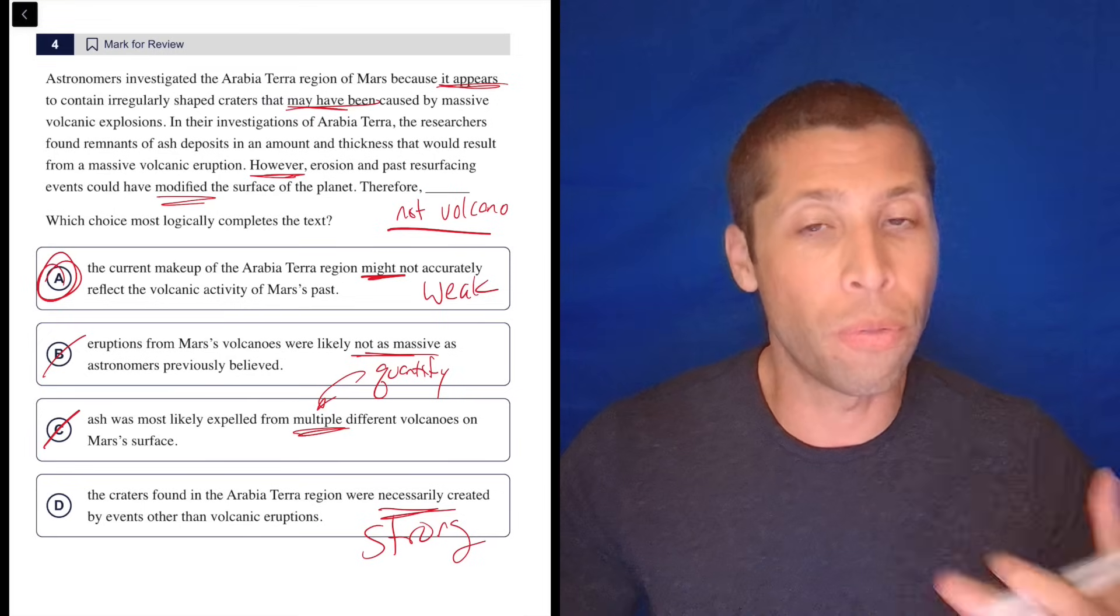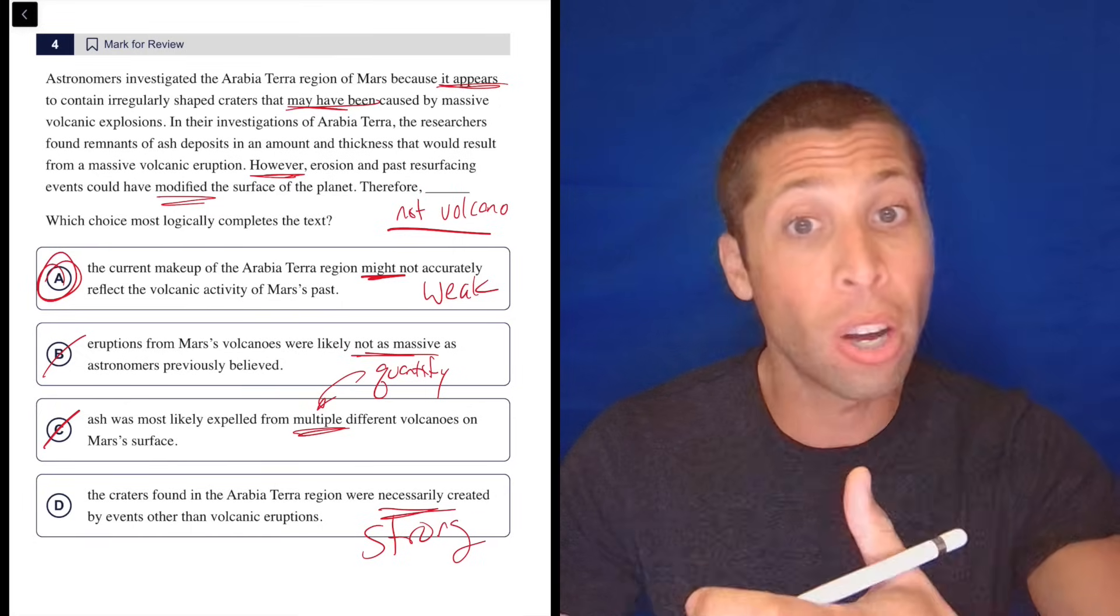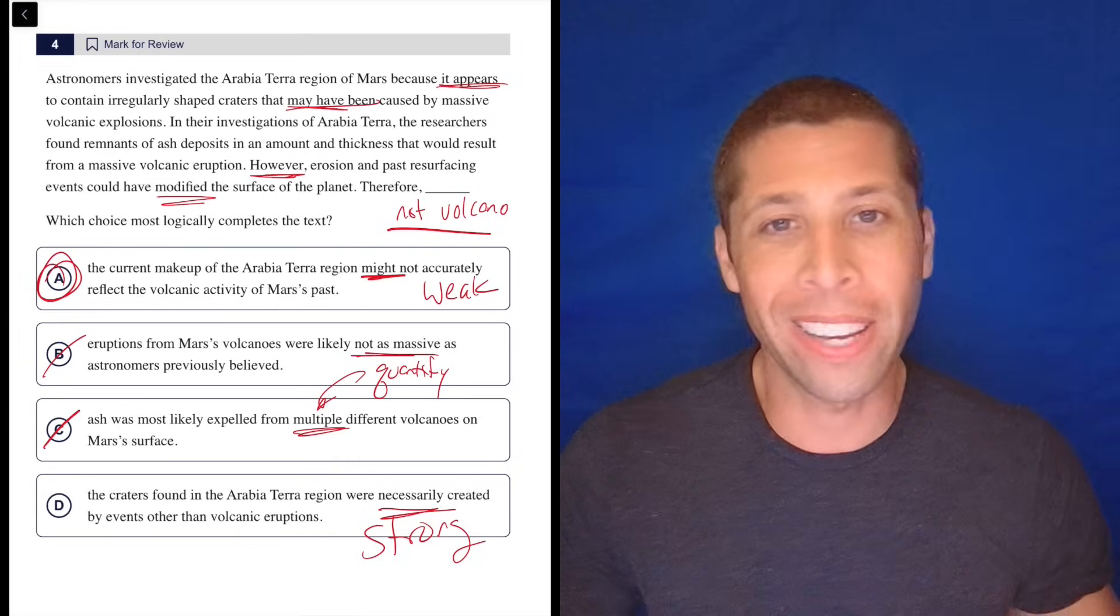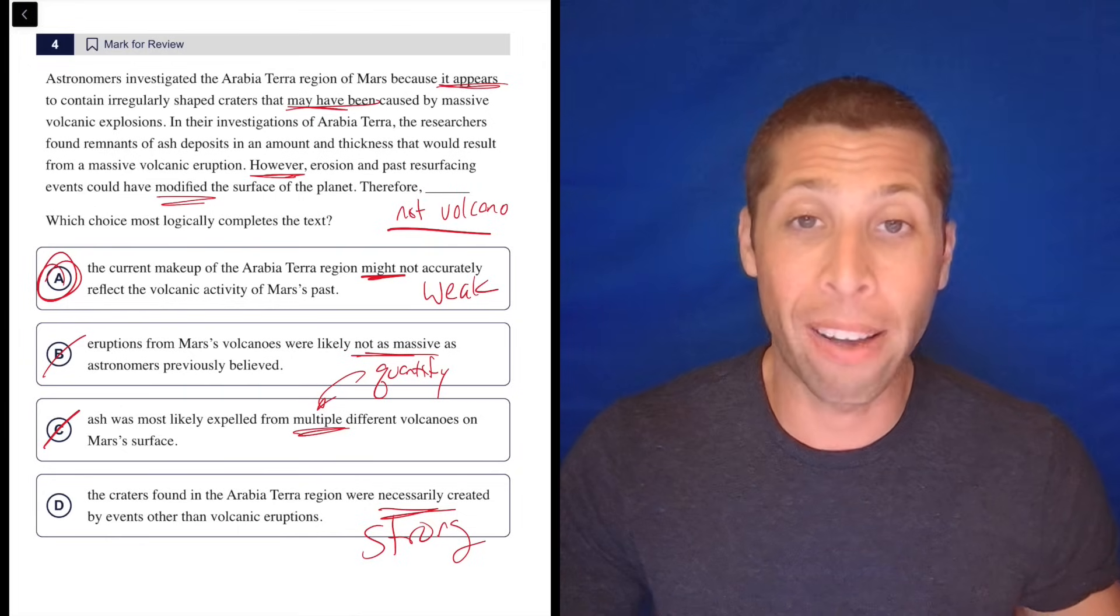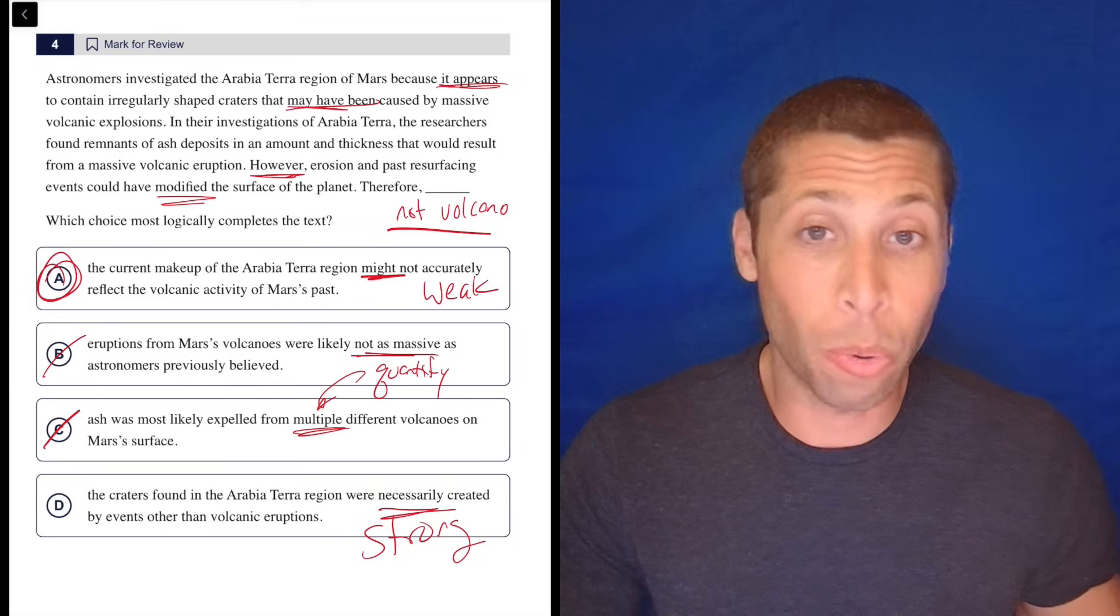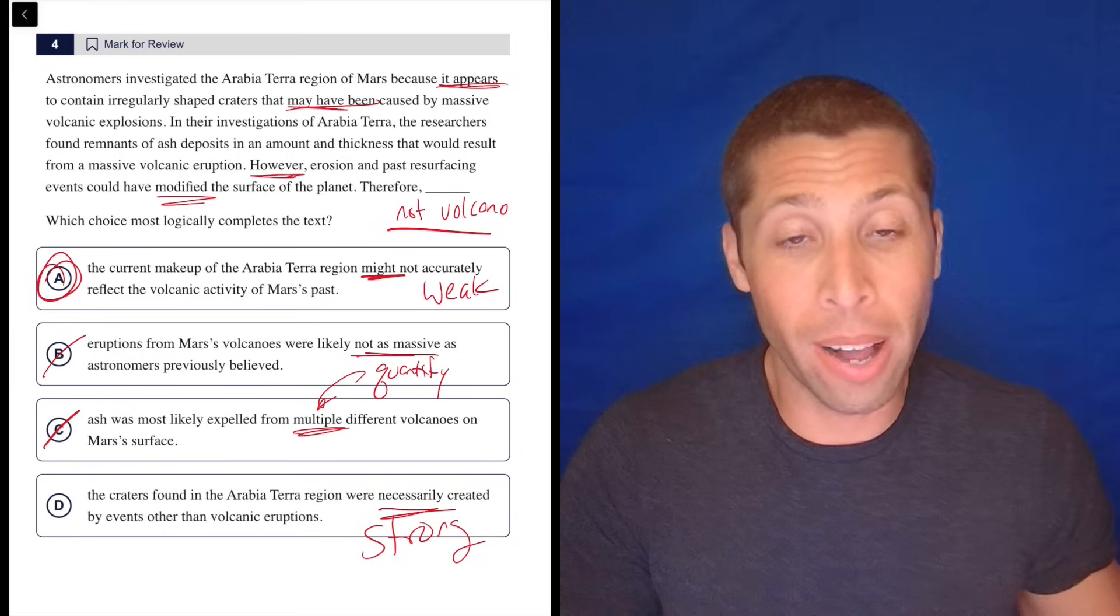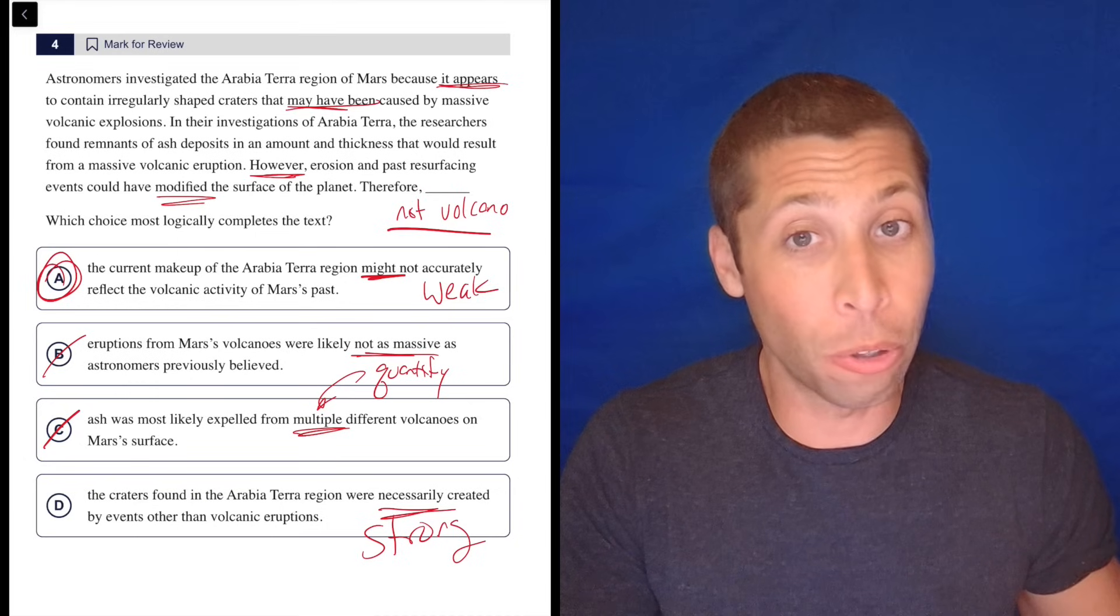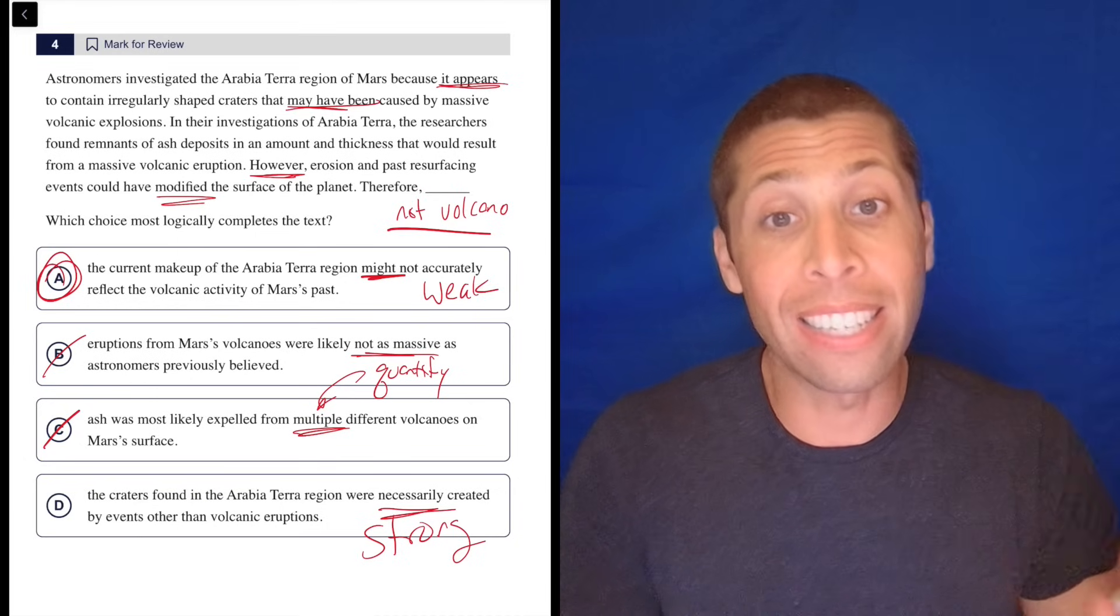That may seem counterintuitive because you feel like you want things that are more definitive and more kind of set in stone. But we want things that are more loosey-goosey. We want it to be a little bit more free to have words like may and might. Those words don't necessarily make me pick a choice, but they certainly help. And so hopefully if you did pick D here, you learned your lesson that A was definitely a much better SAT-style answer.